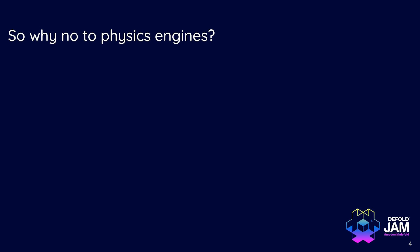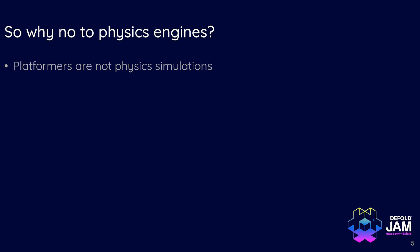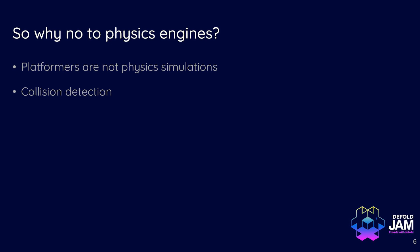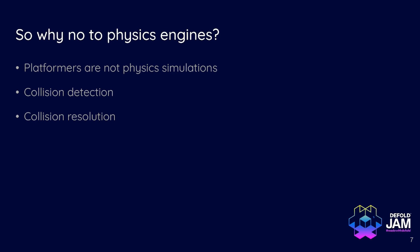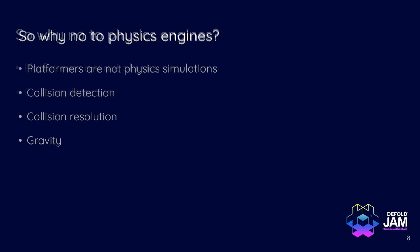So why no to physics engines, you may ask? Well, because platformers are not physics simulations. And physics engines like Box2D offer a variety of features that are simply not needed for a platformer. Things like bounciness, joints, rotation, kinematic impulses, transfer from one object to another after a collision, like momentum is transferred. You don't need all of that. But what you do need is collision detection and to decide where each object should be after a collision happens, so collision resolution. And maybe one other thing is just gravity, but gravity is a very simple formula to implement.